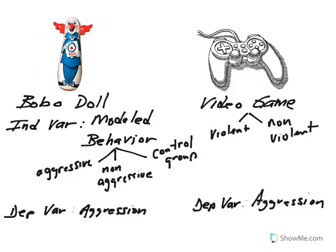The purpose of this video is to illustrate how we can use the four scales of measurement to collect data to test a hypothesis. What I have here are elements of two experiments that we've already been introduced to. On the left we have elements of the Bobo doll experiment by Albert Bandura, and on the right we have the video games experiment illustrated in the correlation is not causation part 2 video.